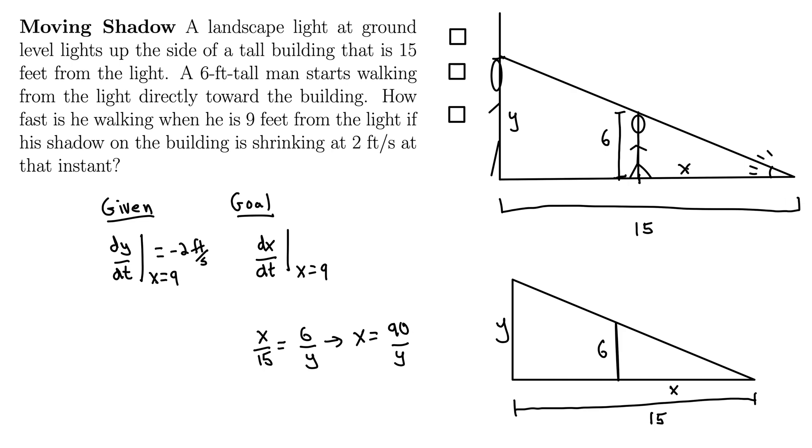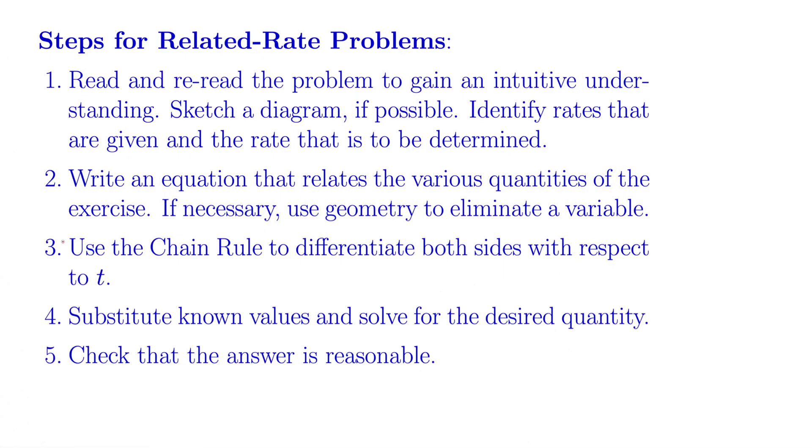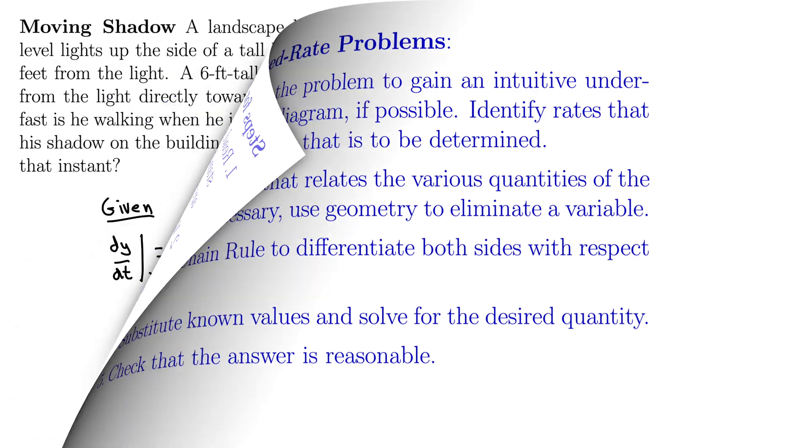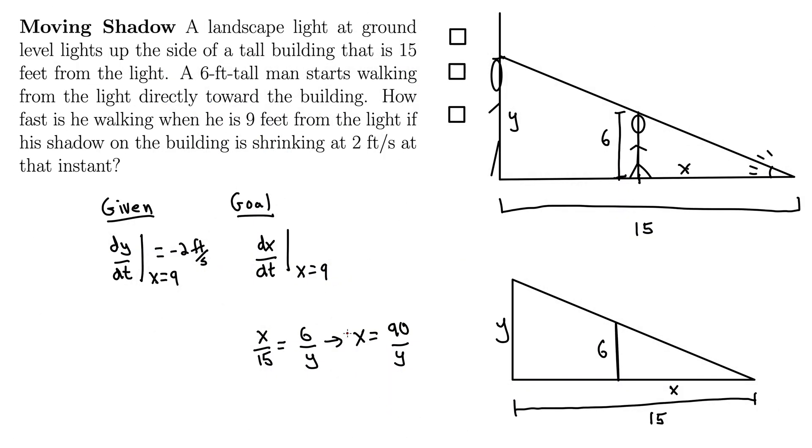Back to our steps. Step 3 says use the chain rule to differentiate both sides with respect to T. Well let's do that. D by DT, D by DT of both sides.